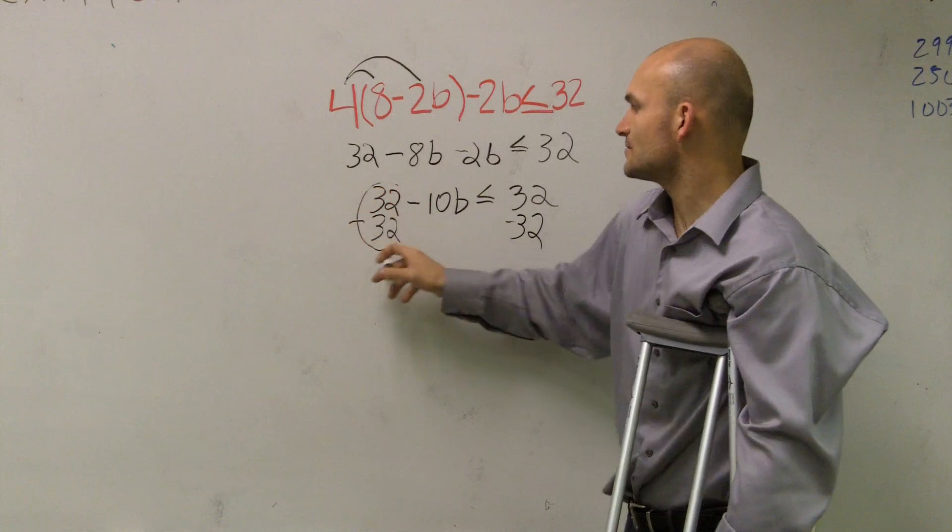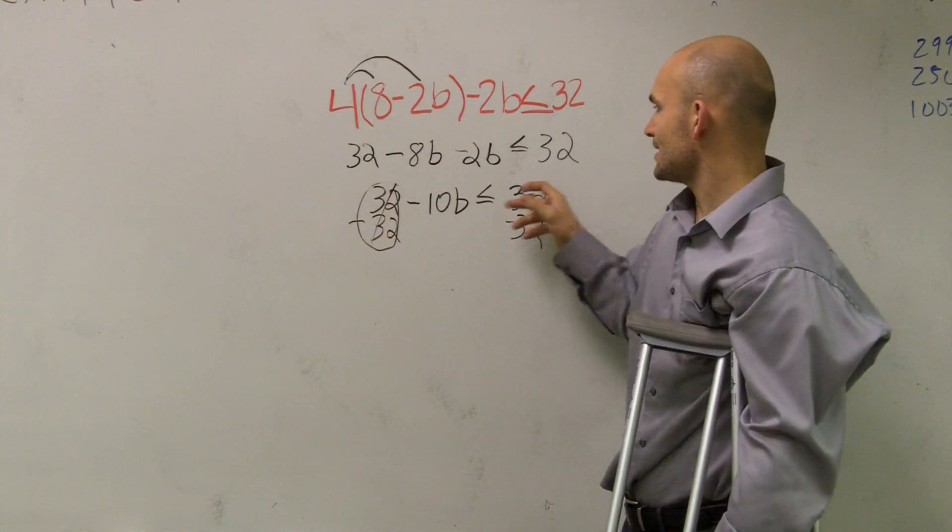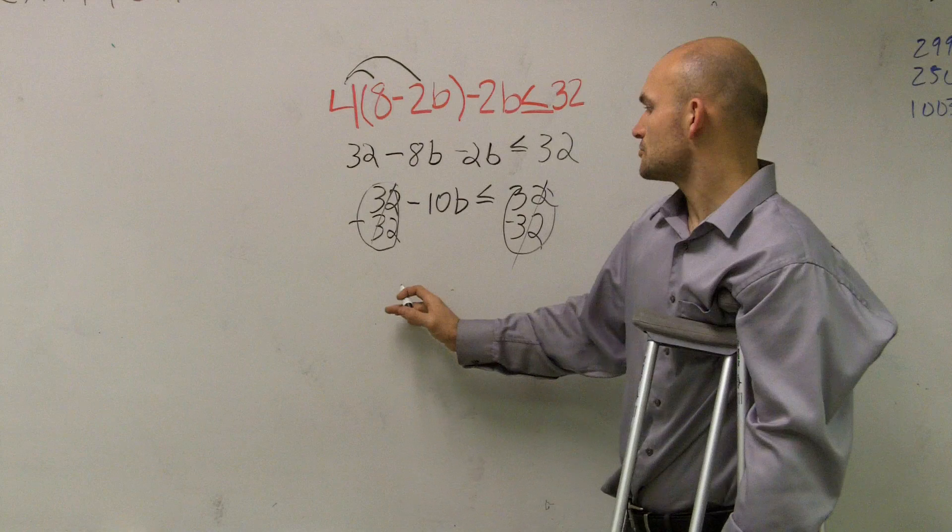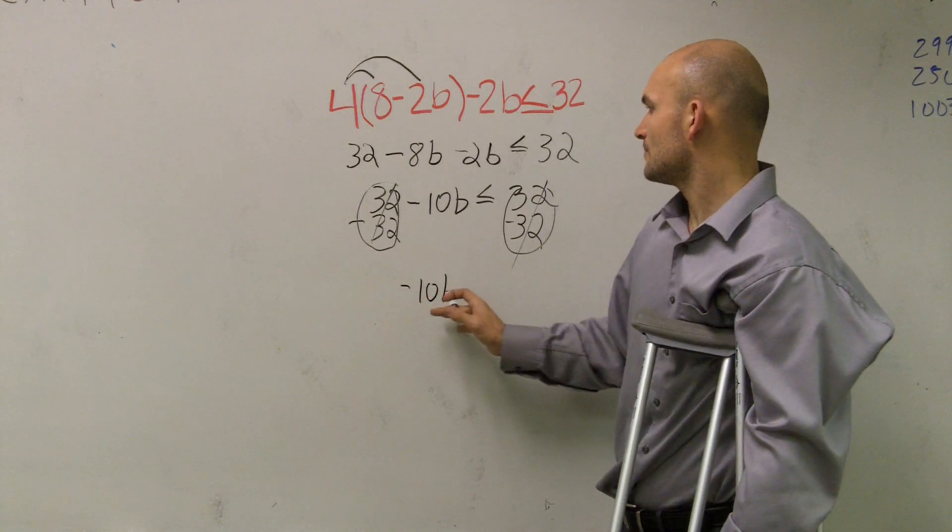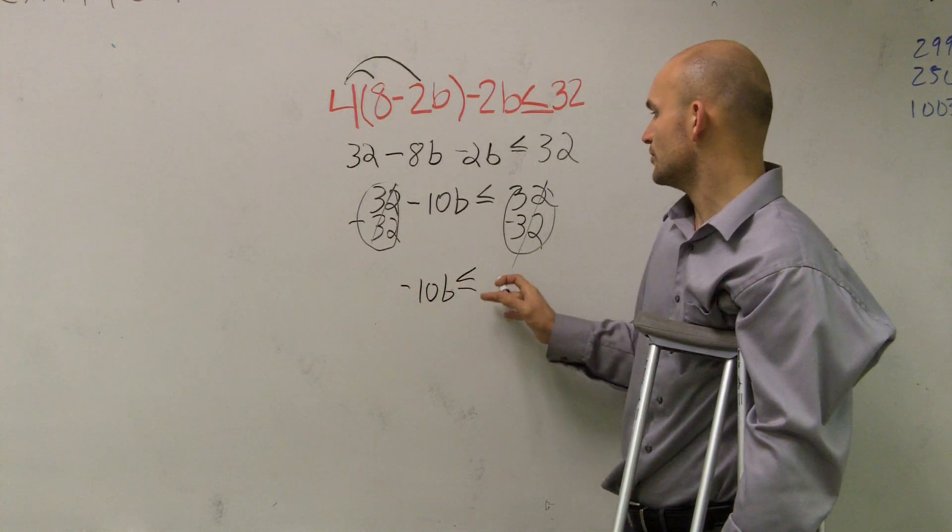So what happens when I do that, that cancels out. And actually, this one cancels out. So I'm left with negative 10b is less than or equal to 0.